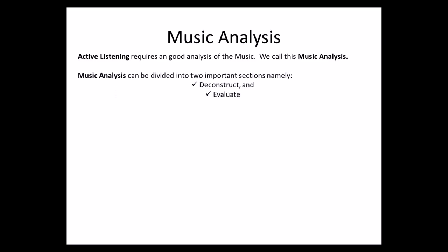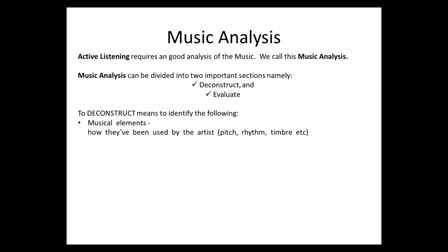Music analysis can be divided into two important sections: deconstruct and evaluate. To deconstruct means to identify musical elements — how they have been used by the artist — such as pitch, rhythm, and timbre, which we have discussed in elements of music. It also means identifying compositional devices such as repetition, sequence, inversion, randomness, serialism, etc.